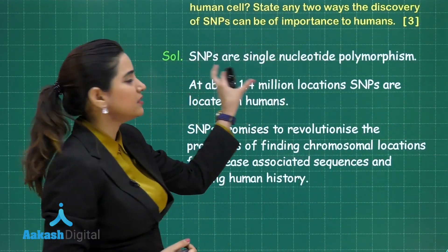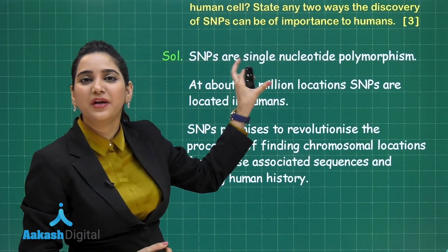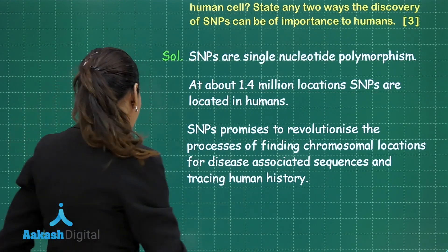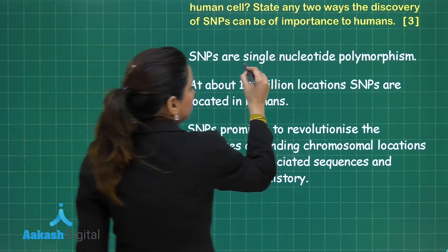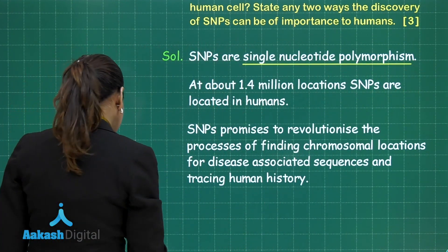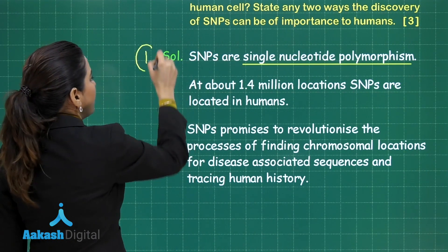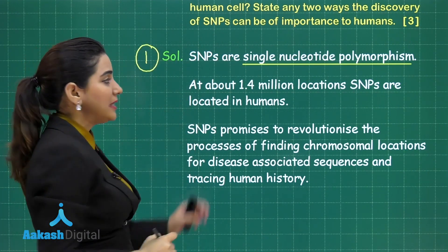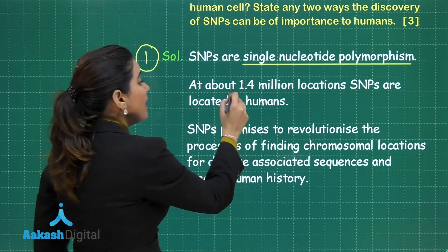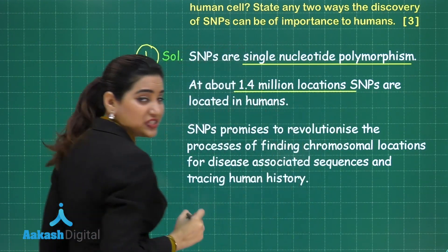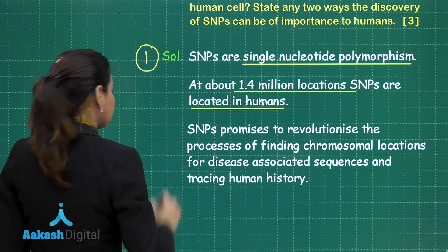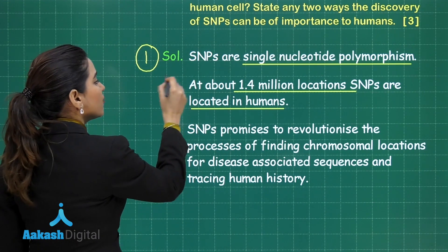First answer: What is SNP? What is the full form? Single Nucleotide Polymorphism — that is the term. If you write this, you will get one mark. Then, for the location: there are around 1.4 million locations where SNPs are found in humans. One mark for this.